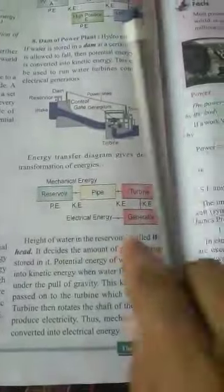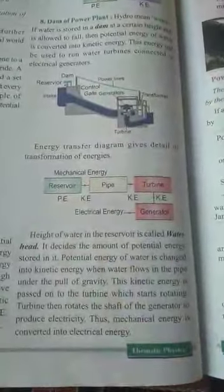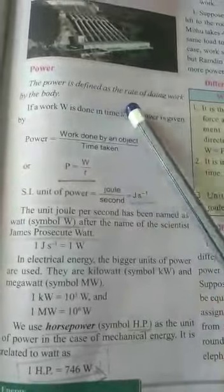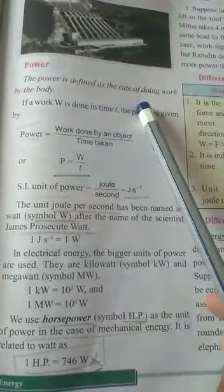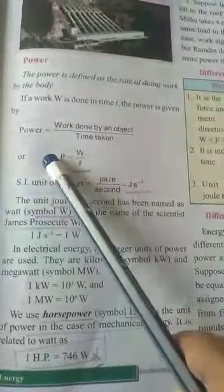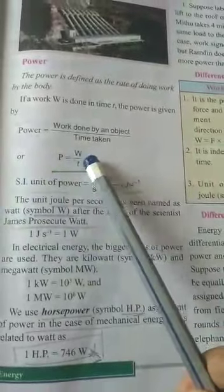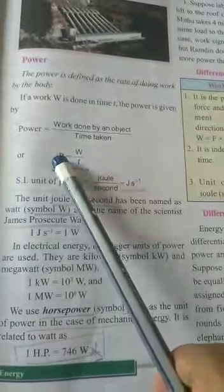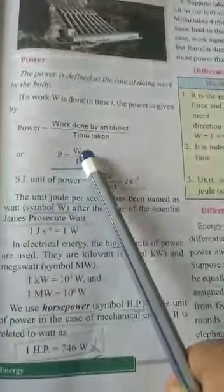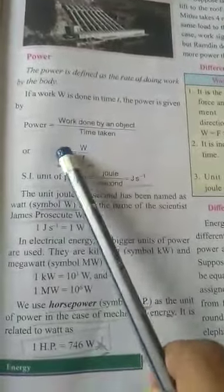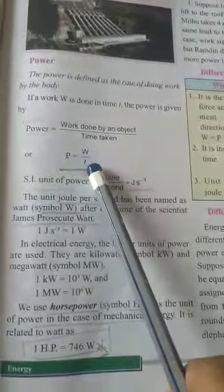The next concept is regarding power. Power is defined as the rate of doing work of the body. Formula for power, work done over time taken. P is the symbol of power, W for work done, T for the time means power is related to time. Power depends upon time.